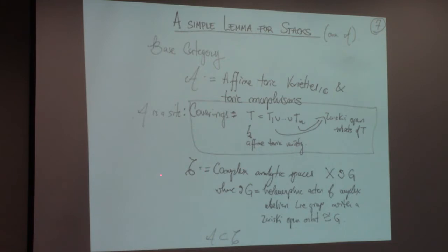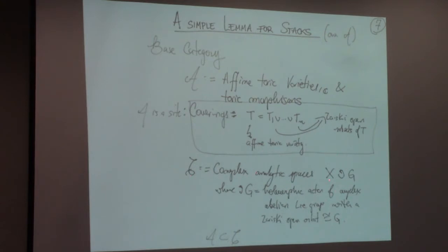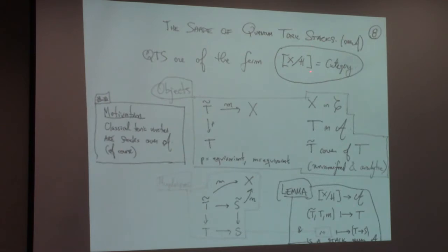I use another important category C: the category of complex analytic spaces with a holomorphic action of a complex abelian Lie group (possibly non-compact) with a Zariski open orbit isomorphic to G. A is inside C. Quantum toric stacks will always be global stacks. The objects of the category are covers over the site of toric things with equivariance, together with a map to a complex analytic G-space.